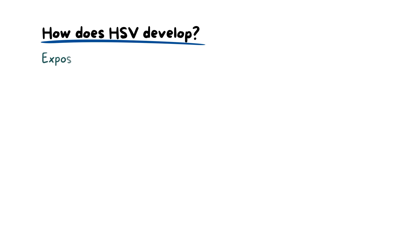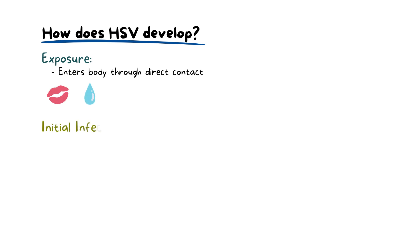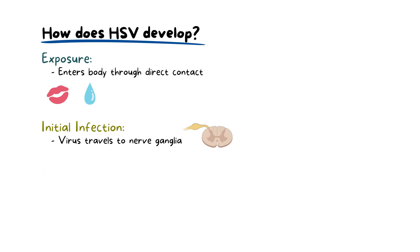Stage one is exposure. HSV typically enters the body through direct contact with an infected person's skin, mucous membranes, or bodily fluids. Stage two is the initial infection, where once the virus gains entry, it travels to the nerve ganglia near the spinal cord through the nerve fibers. Here, it establishes a state of latency, becoming dormant and hidden within the nerve cells.